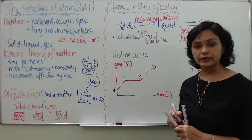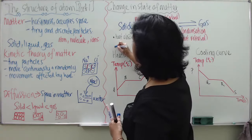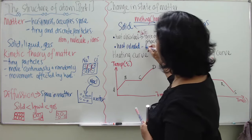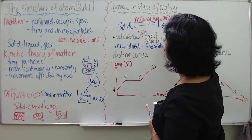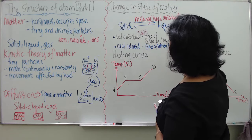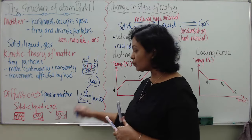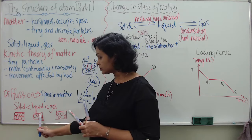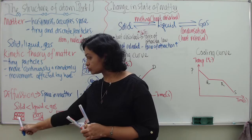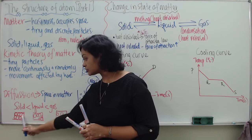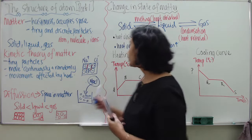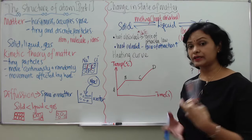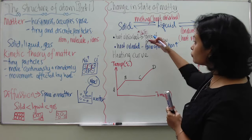Now let's make it the opposite. When heat is released, the force of attraction increases. For instance, during condensation from gas to liquid, and from liquid to solid which is freezing, the space between particles gets nearer because the force of attraction is being produced, and that is the reason why the molecules get nearer to each other.